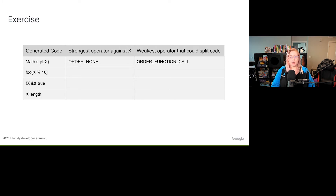Starting with the first row, with the generated code math.sqrt(x), the strongest operator against x is order none, because there are no operators acting on x. The operators in the generated code are order member for the dot square root, and order function call for the square root function call. Order function call is the weaker operator, so that's the weakest operator that could split the code. It's important to note that when calling value-to-code, you're passing the max strength expected against the return code for that input, not of the entire block of code.